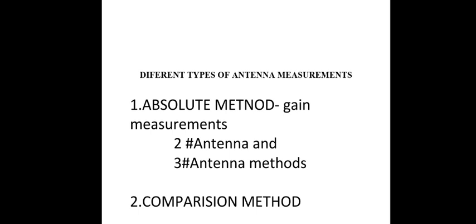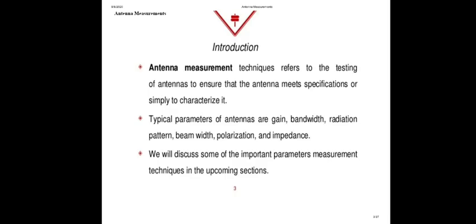Generally, two types of antenna measurements are used. One is the absolute method gain measurement, which is the three antenna method, and another one is the comparison method of gain measurement. Antenna measurement techniques refer to the testing of an antenna to ensure that the antenna meets specifications and simply characterizing it. Why do we need to measure antenna techniques? We need to fabricate or construct an antenna and verify whether it meets specifications and how to characterize the antenna parameters. All these things are done using antenna measurements.